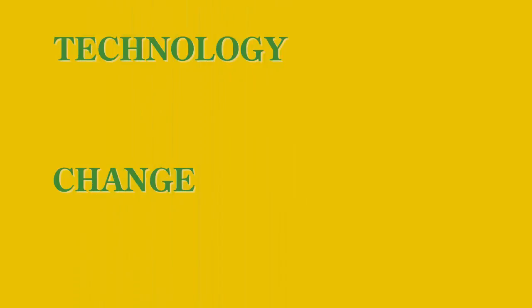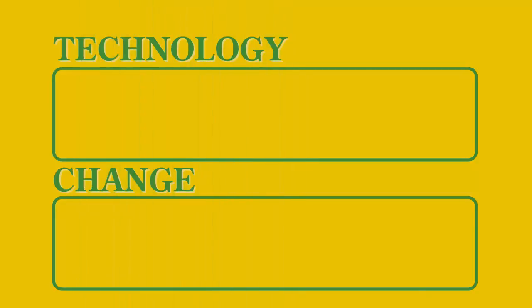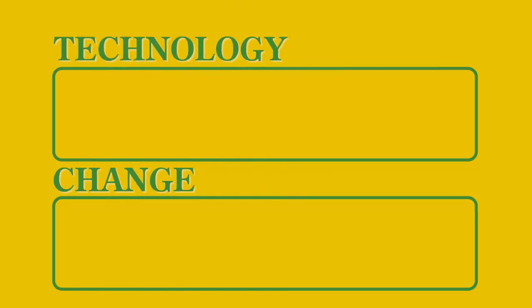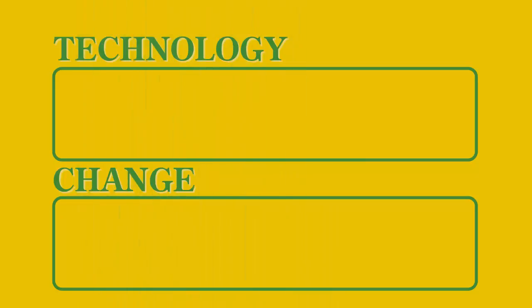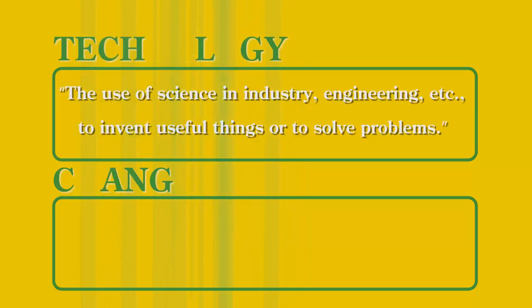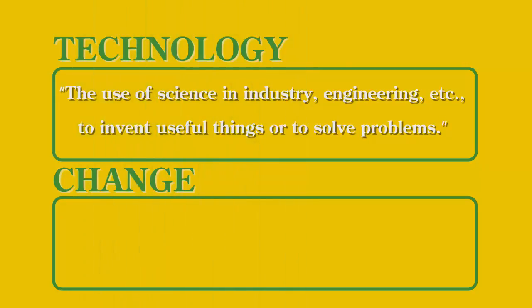How do we conceive what this change will bring? As we begin this investigation, let's set boundaries. What is technology, and what is change? Let's start with technology. While there are many definitions of technology, for this course, let's use this definition: the use of science and industry, engineering, etc., to invent useful things or to solve problems.